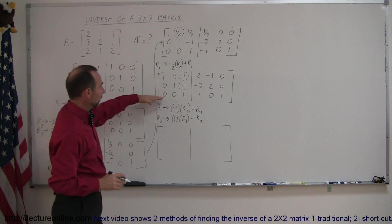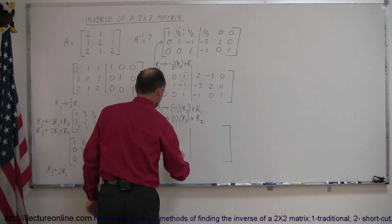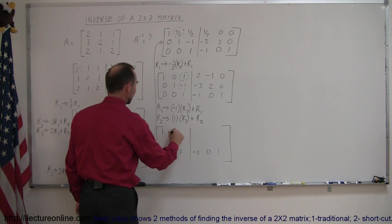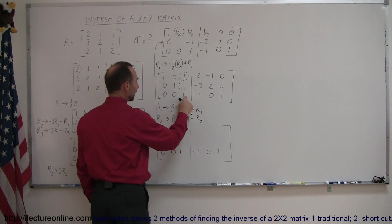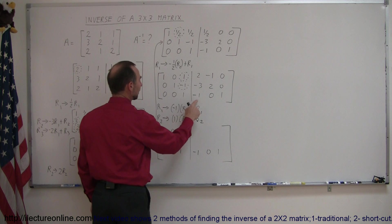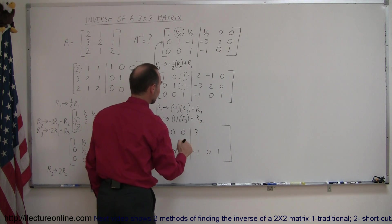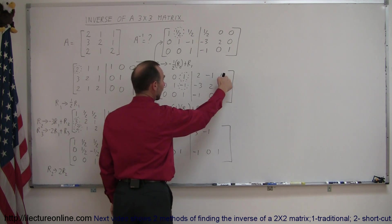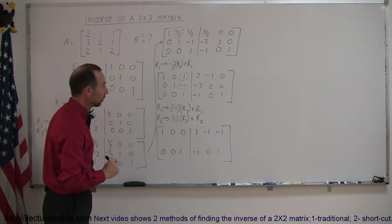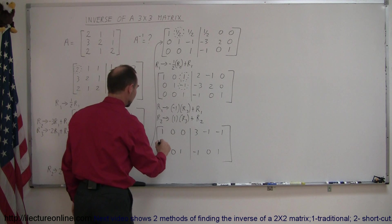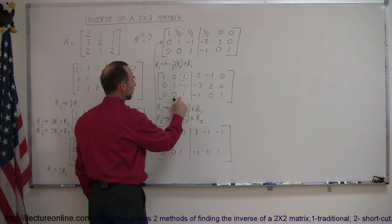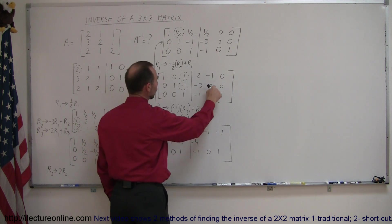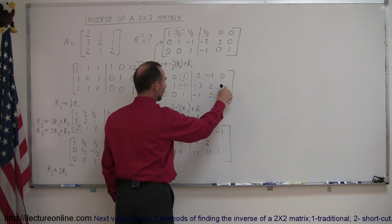Row 3 doesn't change, so copy that down. For row 1: since the first two elements of R3 are zero, those positions in R1 don't change. Negative 1 times 1 is negative 1, added to 1 = 0. Negative 1 times negative 1 is positive 1, added to 2 = 3. Negative 1 times 0 = 0, nothing changes. Negative 1 times 1 is negative 1, added to 0 = negative 1. For row 2: negative 1 times 1 added to negative 1 = 0. Negative 1 times negative 1 is positive 1, negative 1 added to negative 3 = negative 4. Negative 1 times 0 = 0, so that stays as 2. Negative 1 times 1 is negative 1, added to... one times 1 added to 0 = 1. And we're done.